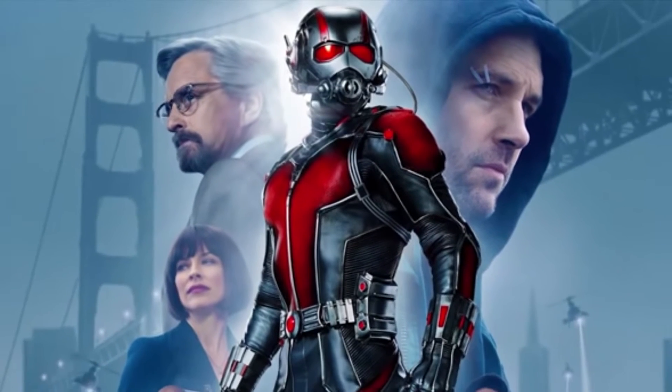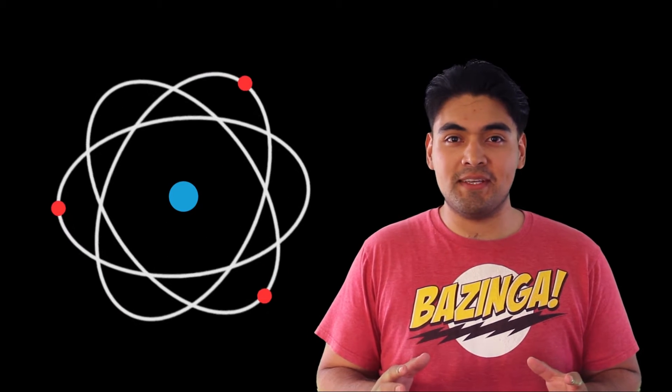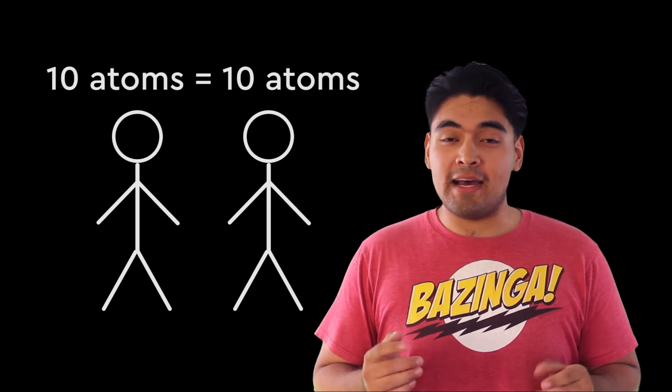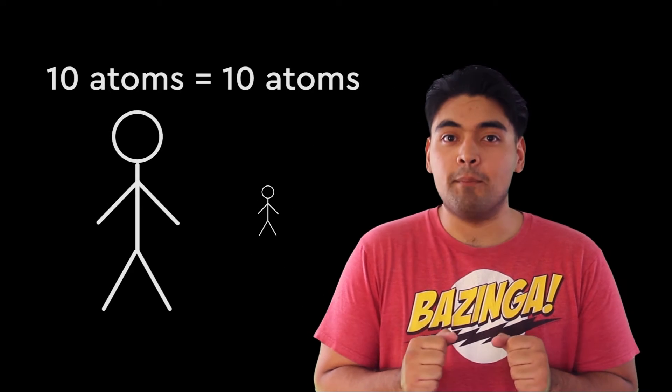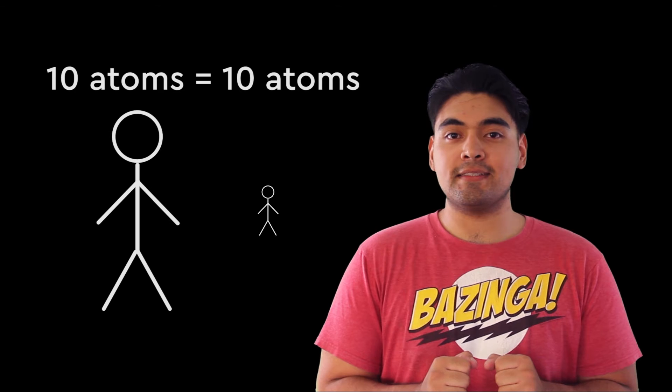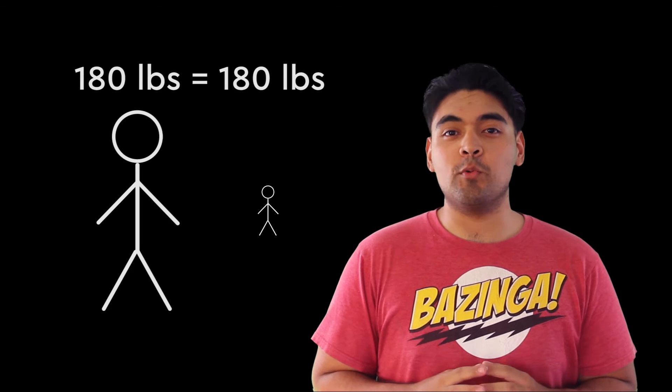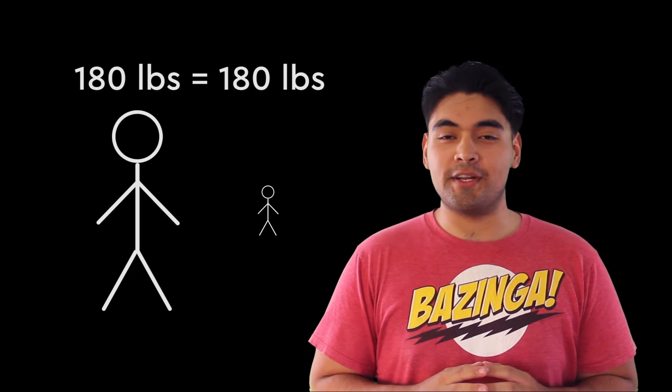In the first Ant-Man movie, Hank Pym says that his Pym Particles can change the distance between atoms. Then later in the movie, Hope explains that the Pym Particles don't actually affect an object's mass. If we assume both of these premises are possible, that would mean that when an object shrinks, it would become more dense, but at the same time its actual weight wouldn't change.